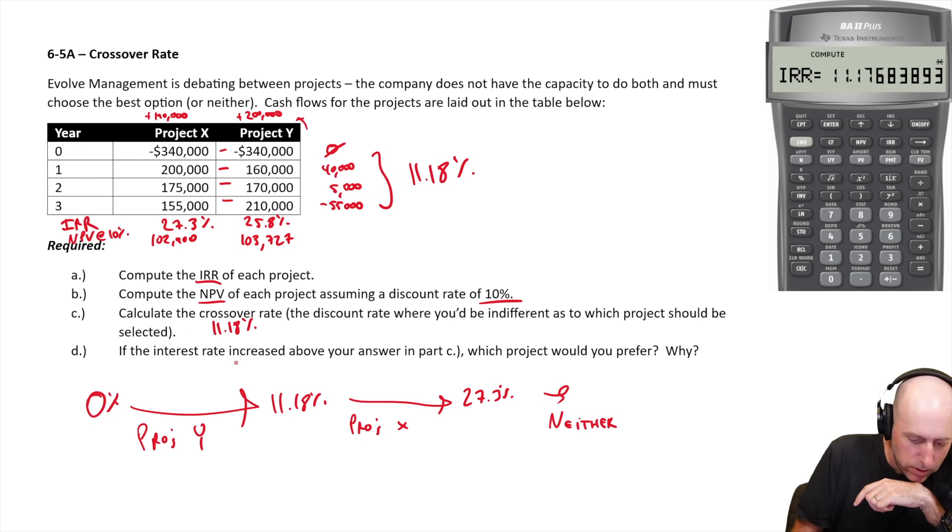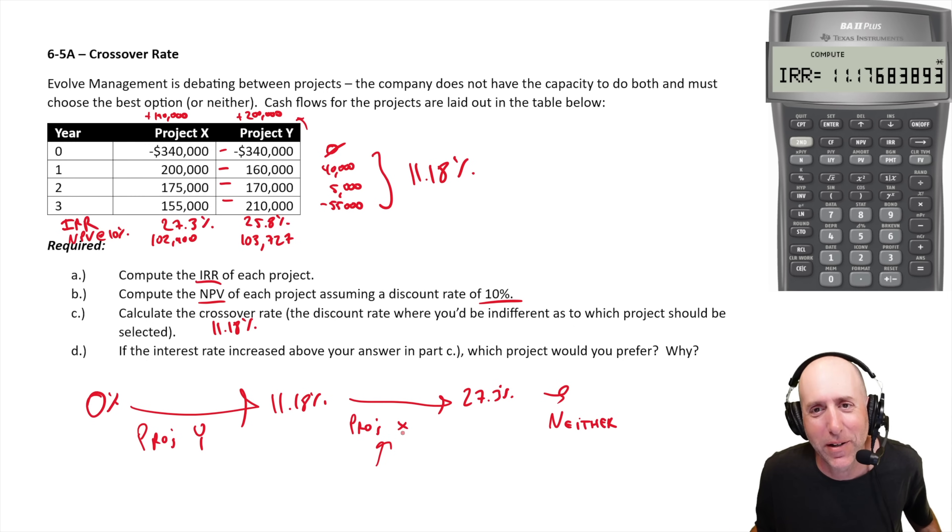So the question goes on. If the interest rate increased above your answer in part C, above 11.18%, which project would you prefer? We would prefer project X. Why? Because it produces a higher net present value than project Y does at that level. And we sort of explained why in that little graphical chart I put on the bottom.